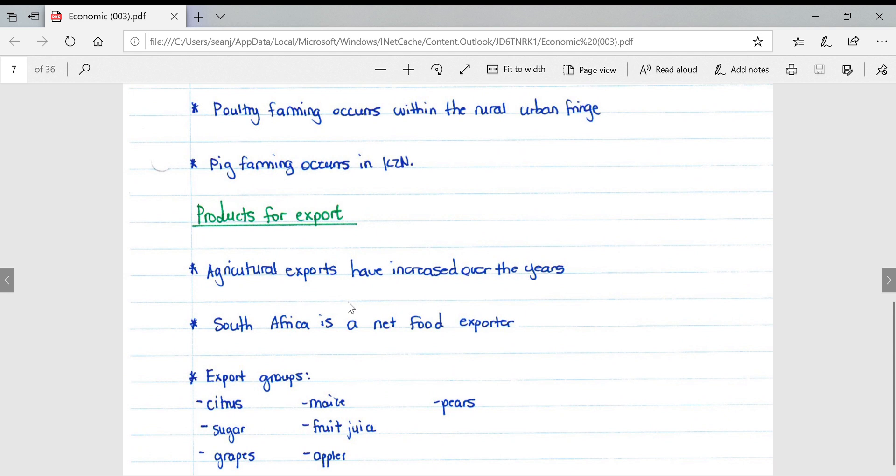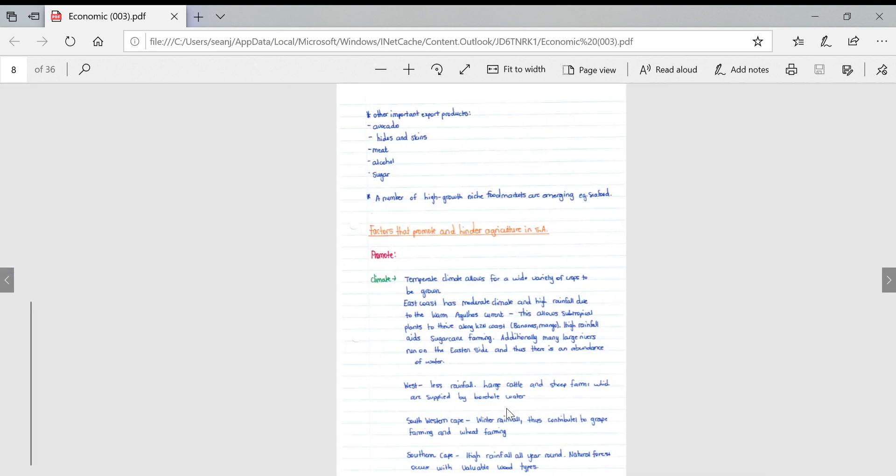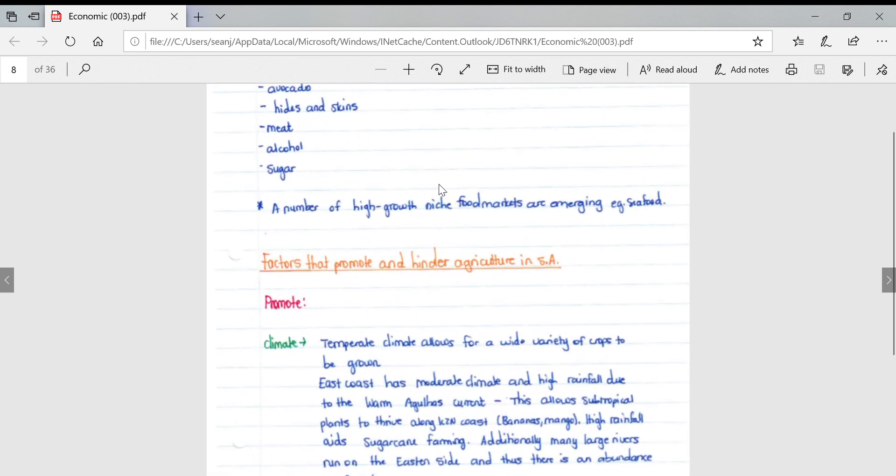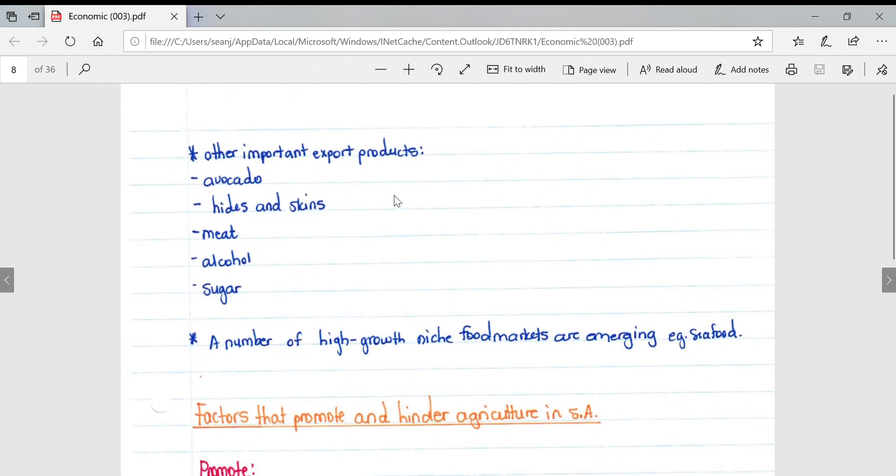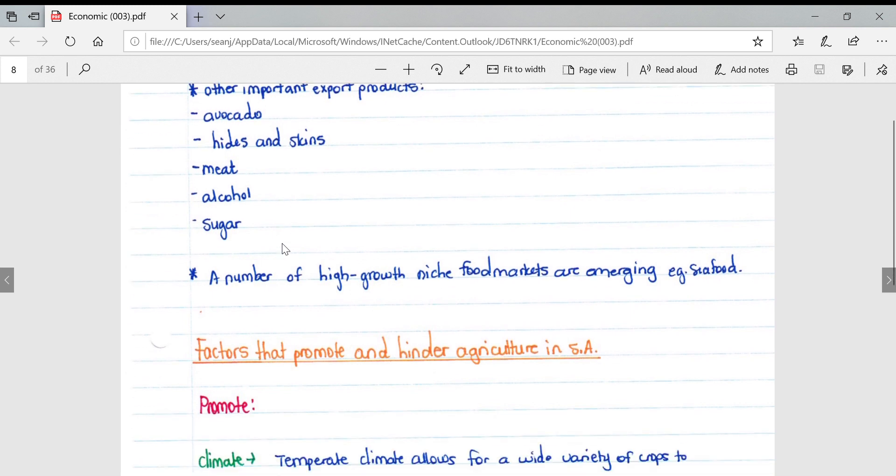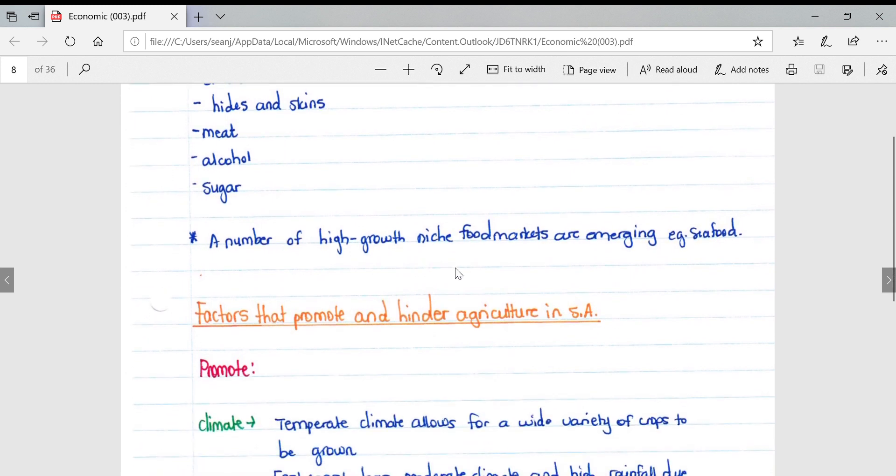For main products that we export, agricultural exports have increased over the years. South Africa is a net food exporter. Some of the crops we export include citrus, sugar, grapes, maize, fruit juice, apples and pears. Other important export products include avocados, hides and skins, meat, alcohol and sugar. A number of high growth niche food markets are emerging, specifically in the seafood sector.